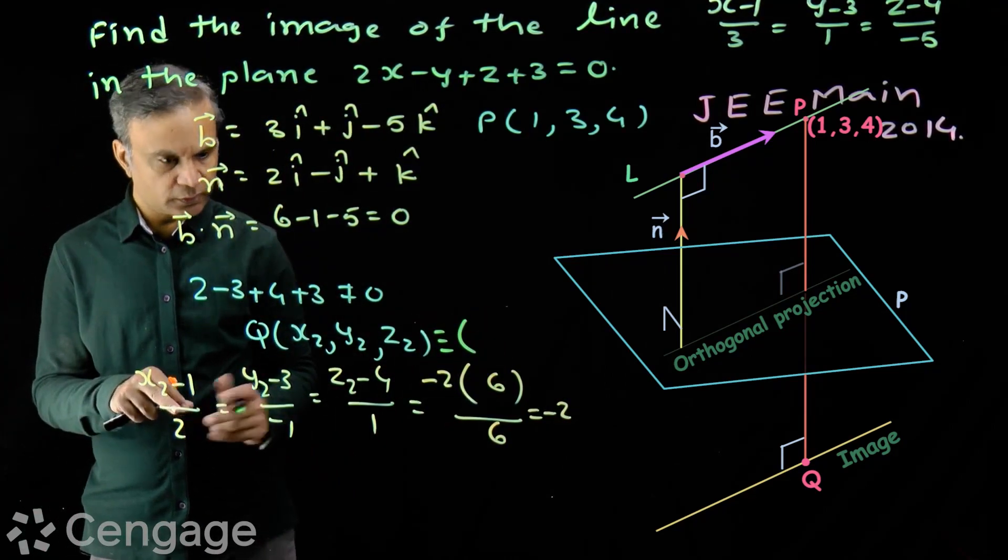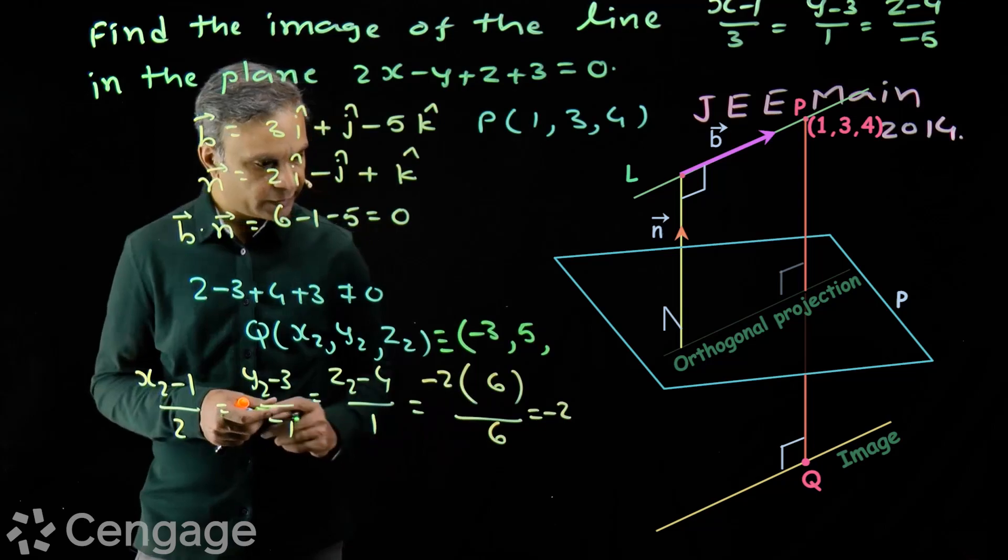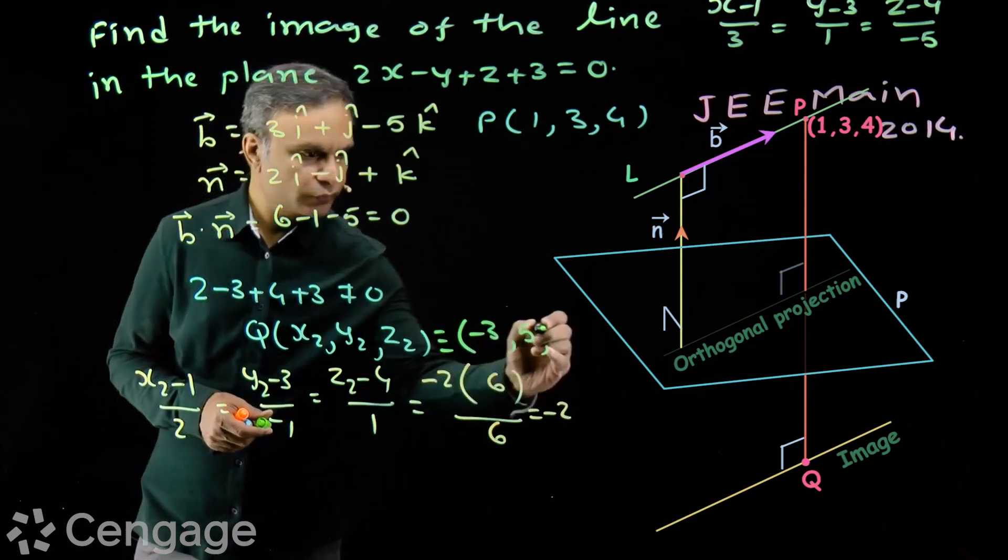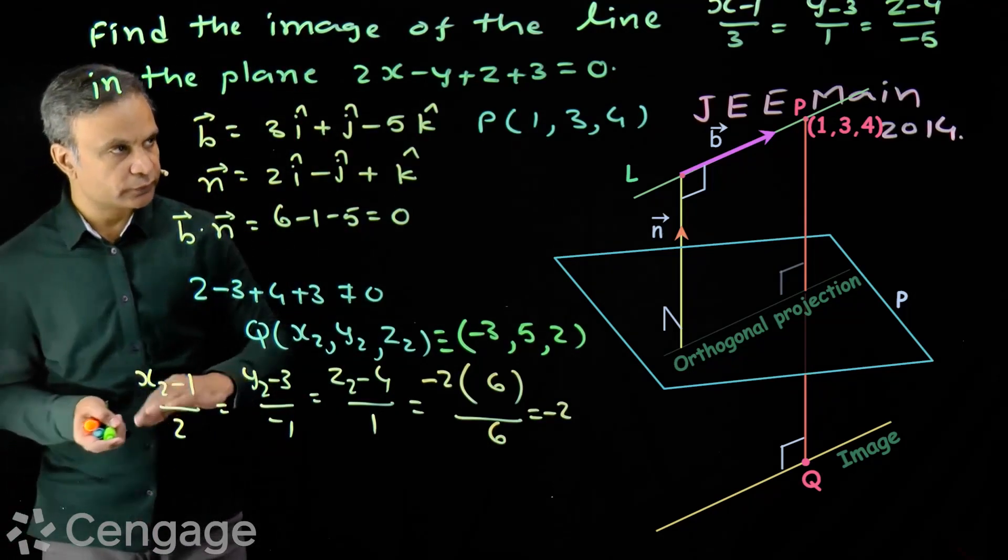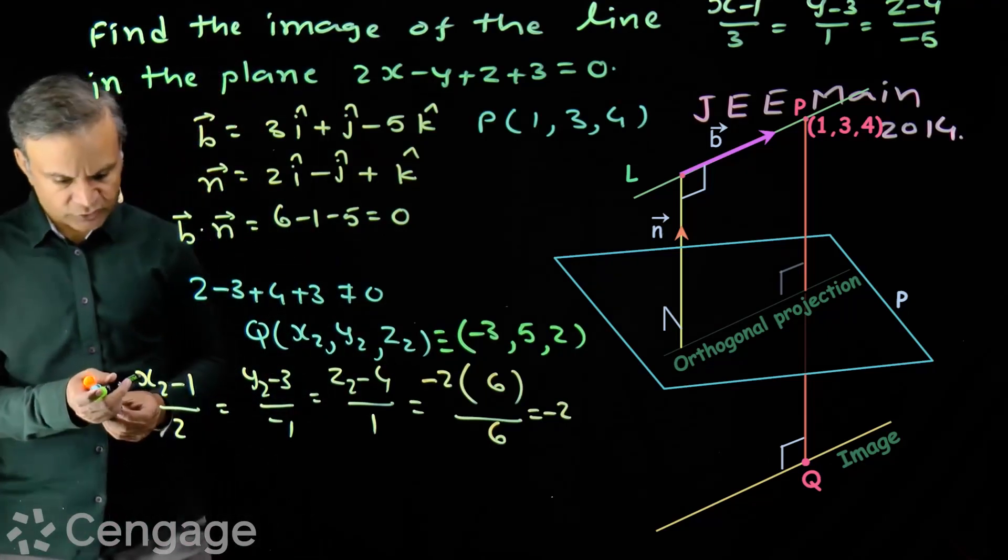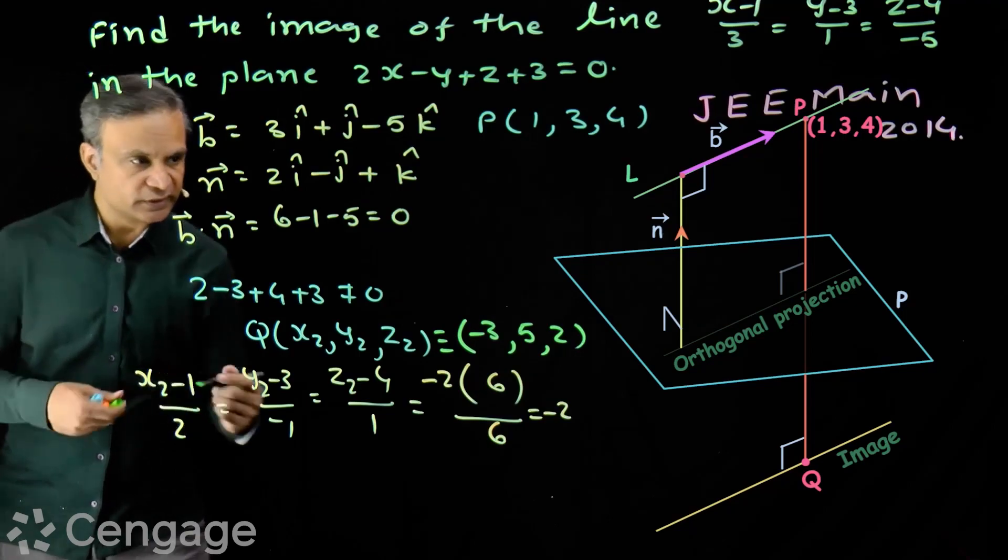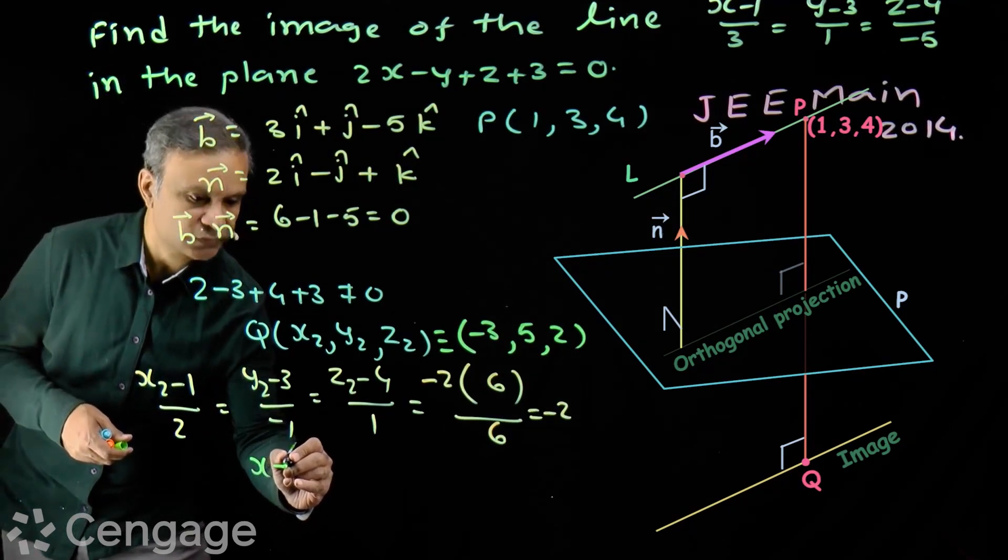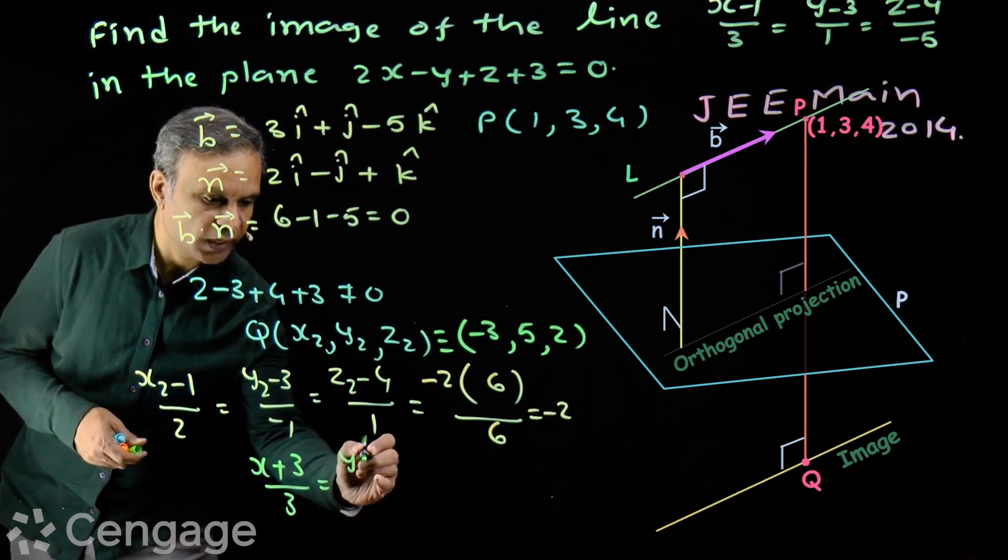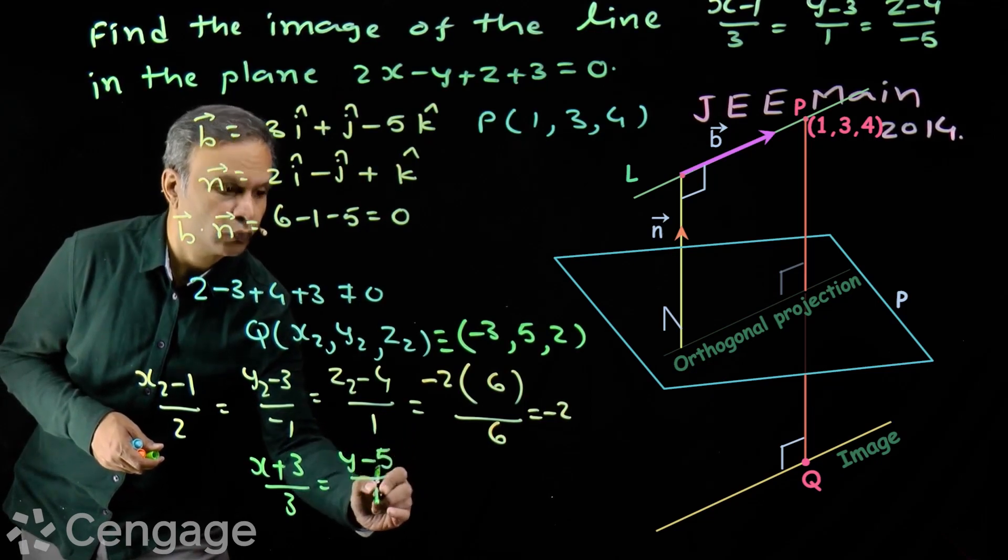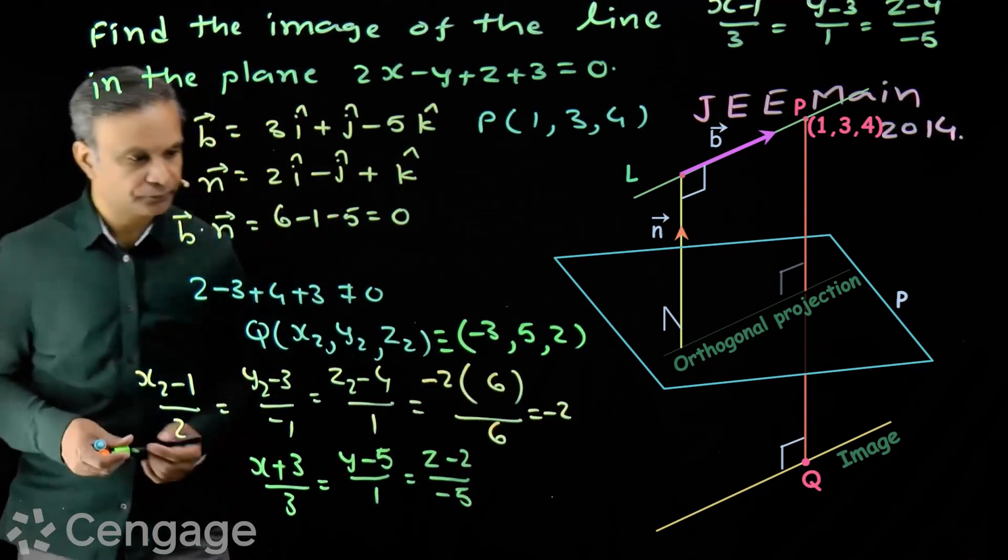X2 will be minus 3. Y2 will be 5 and z2 will be 2. So we have coordinates of image. Direction ratios values of line are 3, 1 and minus 5. So equation of image line will be x plus 3 over 3 is equal to y minus 5 over 1 is equal to z minus 2 over minus 5.